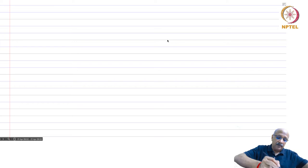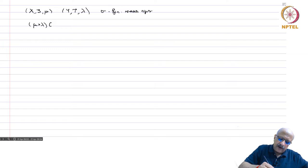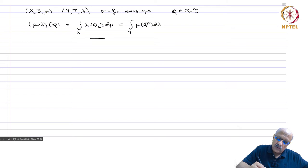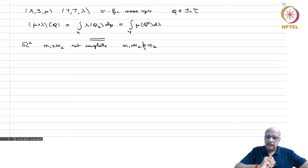We were looking at the product measure. We have (X, S, μ) and (Y, T, λ) sigma-finite measure spaces. Then μ×λ is the measure defined on Q belonging to S×T, the product sigma-algebra. This was defined as the integral over X of λ(Q_x) dμ, and this equals the integral over Y of μ(Q^y) dλ. On R², for instance, m₁×m₂ is not complete.